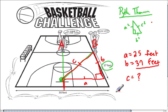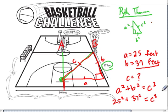So we're going to use the Pythagorean theorem. A squared plus B squared is going to be equal to C squared, and A is 25, so it's 25 squared plus 37 squared equals something else squared.